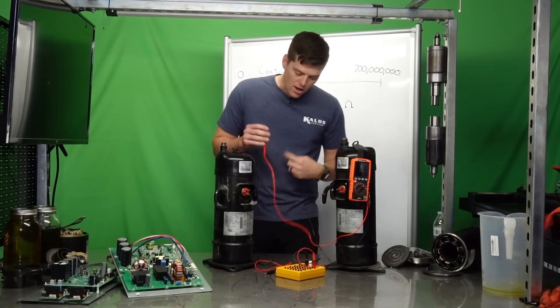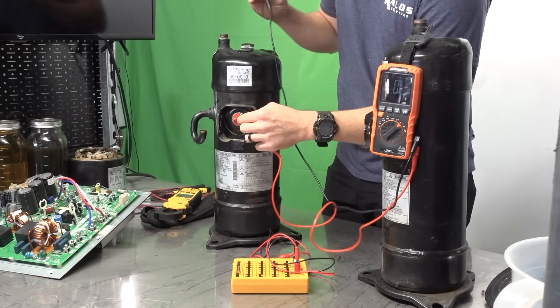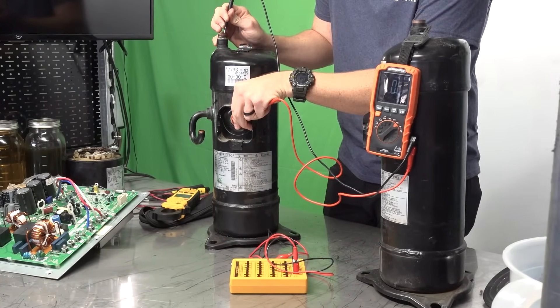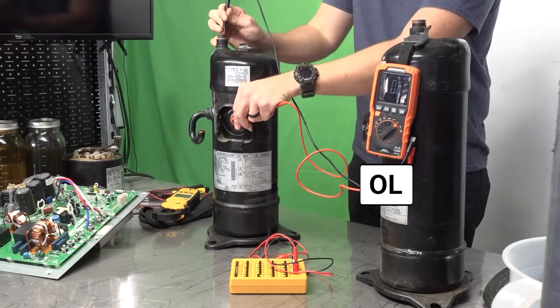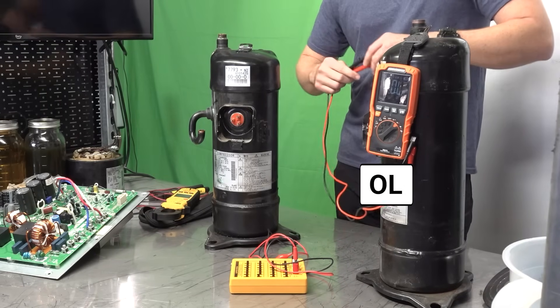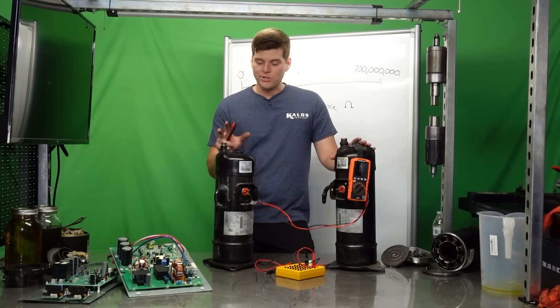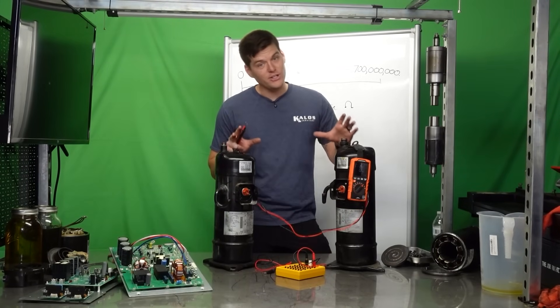Now let's jump over to this other compressor. I'm going to do the same thing and check in the same spots as you should. And with that, I'm going to get no satisfactory beep, and also it says OL. Now, if I was out in the field and it's a Friday, and man, I really got to get going, I've got one bad compressor, and this one's good. But the joke's on you because they're actually both bad.